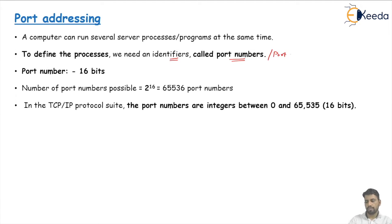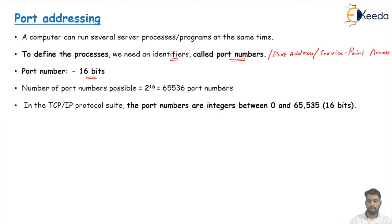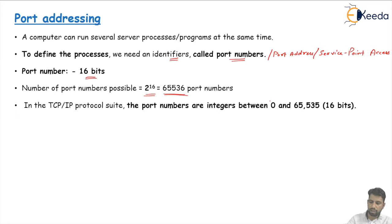The port number is mainly 16 bits, present in our TCP header or in the UDP header segment. Because of the 16-bit field, we have a total of 65,536 possible port numbers, ranging from 0 to 65,535.